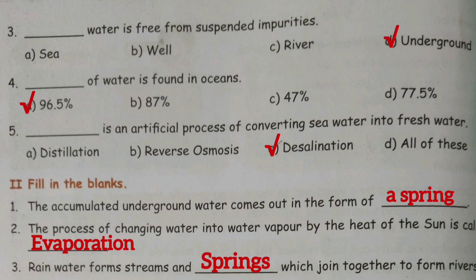Fill in the blanks. First one: the accumulated underground water comes out in the form of — answer: a spring.